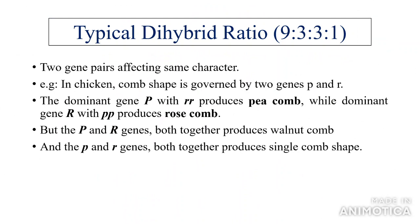Typical dihybrid ratio: 9:3:3:1. Two gene pairs affecting the same character. Example: in chicken, comb shape is governed by two genes P and R. The dominant gene P with recessive r produces pea comb, while dominant gene R with recessive p produces rose comb. Both P and R together produce walnut comb, and recessive pp rr produces single comb shape.